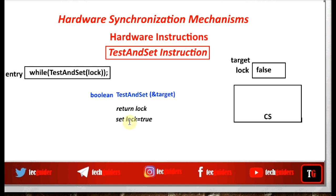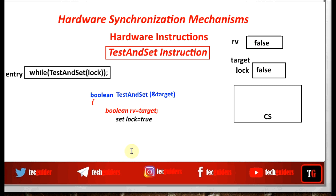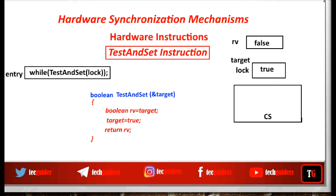Since we may change the value of lock, we copy this value to another boolean variable rv. Now boolean rv contains the value false. This value will be returned at the end of the function. Also, this function should set lock to true — perform target equals true. The changes made to target are automatically reflected to the lock variable, so the lock is set to true, and the previous value, which is false, is returned by the function. So the while loop becomes while(false), exits, and the process enters the critical section.